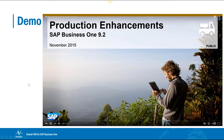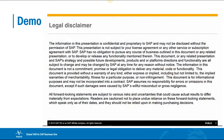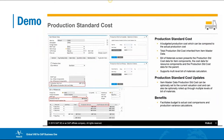Welcome to our feature clip showcasing production enhancements for SAP Business One Release 9.2. With the introduction of resource functionality enabling basic production capacity management, we can now monitor complete standard production costing and analyse real production variances with simplification of bond management and greater flexibility using production orders.